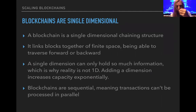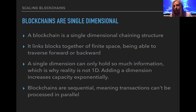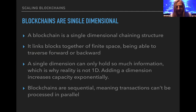Blockchains are single-dimensional structures — they chain in one direction. You have a block chained to the next block and the next. If you change any bit in a previous block it breaks the chain. It's a single dimension that you traverse forward and backward, like a line, linking blocks together in a finite space. A single dimension can only hold so much information, which is why reality is not one-dimensional. Adding a dimension increases capacity exponentially — that is simply mathematically proven.